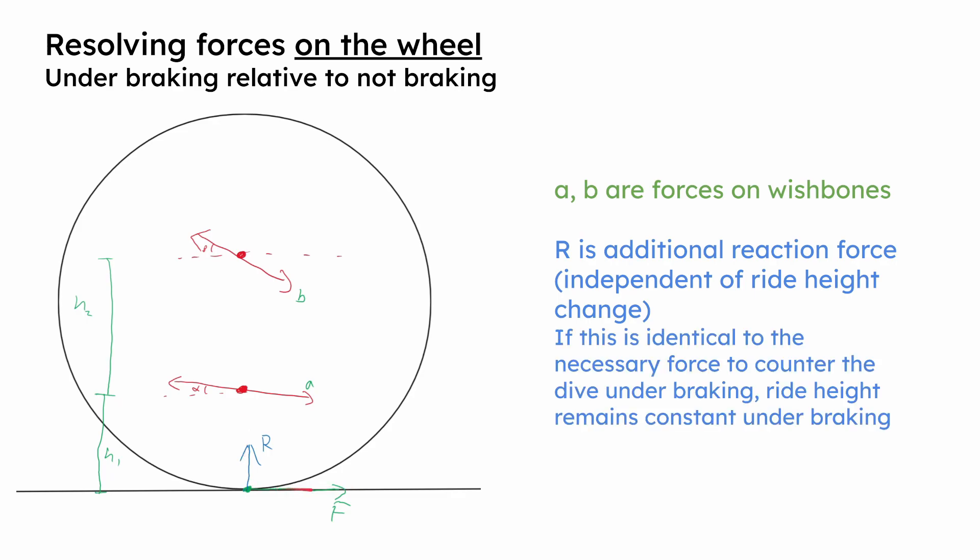We have F just being the braking force, however it's previously been labelled as the front braking force because we're only considering the front wheel. And H1 and H2 are just the heights of the wishbones, with H2 being the height between them. And we will also assume that the wishbones mounting points and the tire contact patch are all in a vertical line, and wheel mass is considered to be negligible, so any acceleration on the wheel is ignored for simplicity.